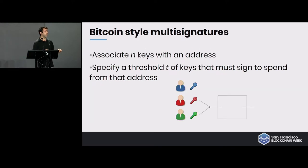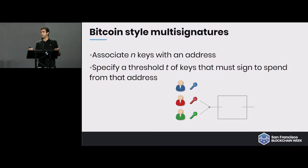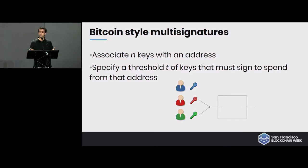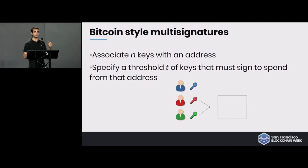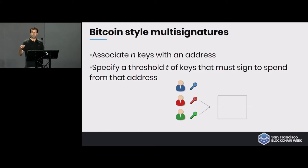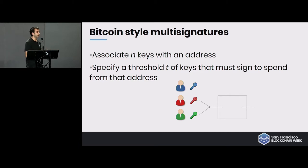Bitcoin has a feature called multi-signatures which does just this — it's one of the oldest features added to Bitcoin. You can have an address where instead of this being a single key address, this is a multi-sig address. You add n keys to this address and specify some number t, and say in order for this transaction to be valid you need to sign with t of these keys. In the example we have three people and they split their key such that any two of them need to sign — this is what we call a two-of-three multi-sig.